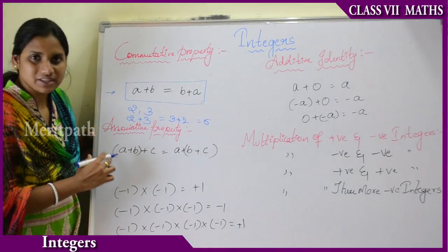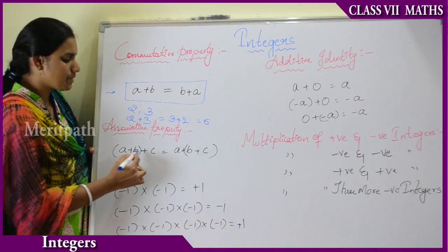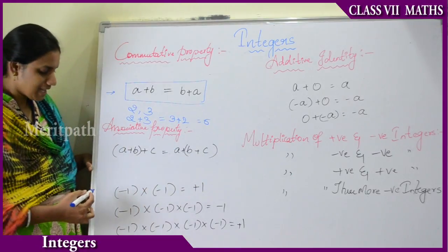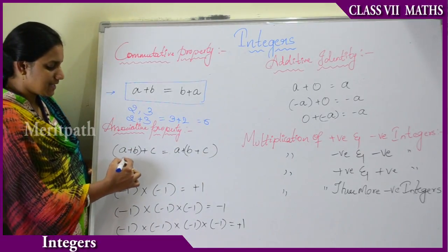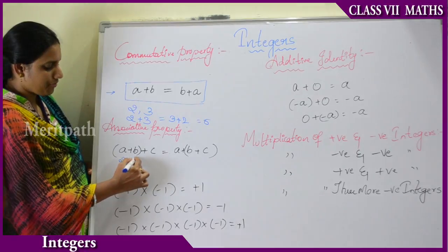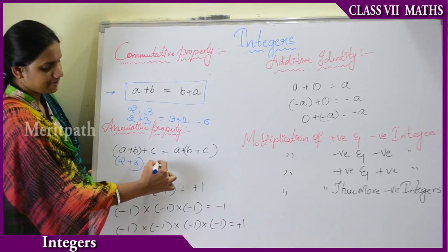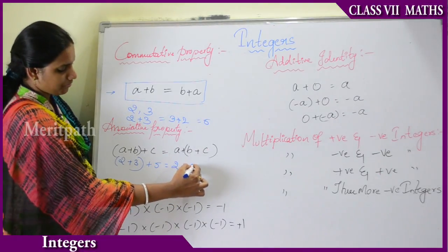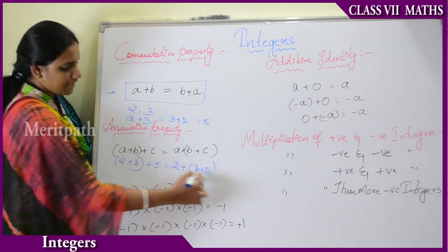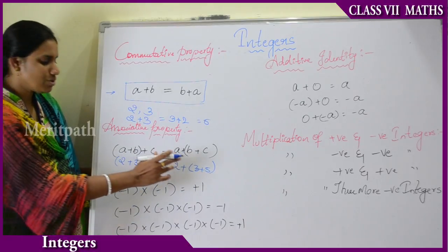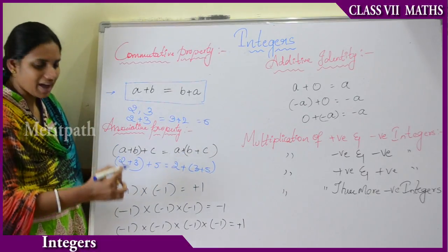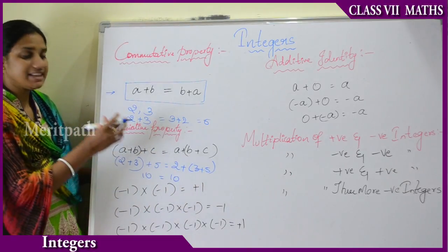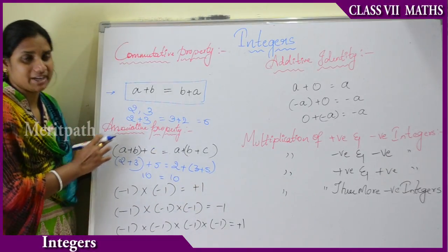Now let us see the associative property, that is: (a plus b) plus c equals a plus (b plus c). For example, (2 plus 3) plus 5 equals 2 plus (3 plus 5). Here LHS equals RHS because 2 plus 3 is 5, and 5 plus 5 equals 10, giving 10 equals 10. Therefore this property is called the associative property.